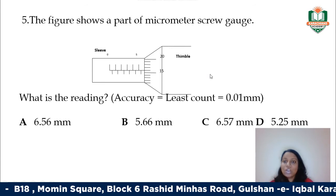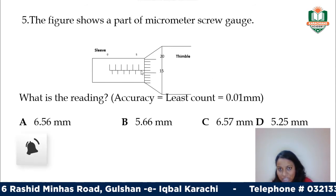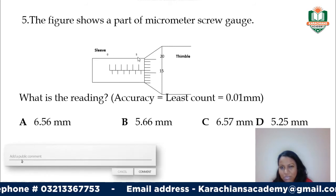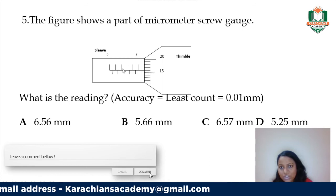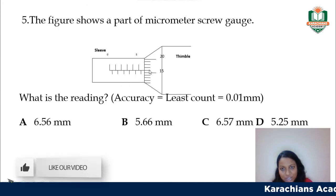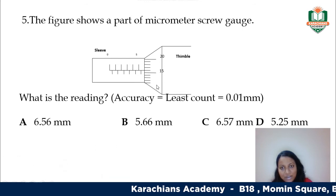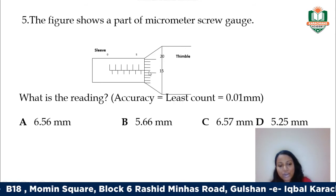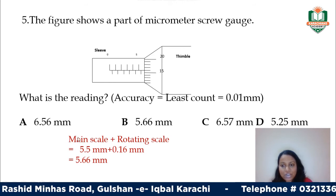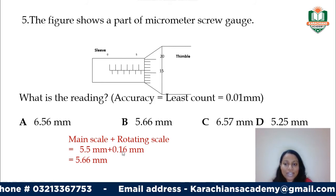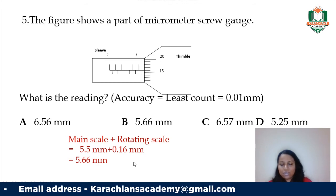Next is a micrometer screw gauge — what is the reading? You look at the datum line. Take your main scale reading: the digits going up show 0, 1, 2, 3, 4, 5 — the lower half adds 0.5 — so the main scale reading is 5.5. Then the thimble scale reading: counting up from 10 gives 15, 16, 17, 18, 19, 20 — so it's 16, which is 0.16 mm. Main scale 5.5 plus thimble scale 0.16 millimeters gives your final answer.